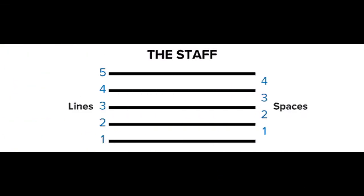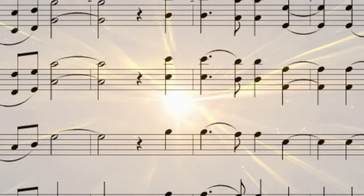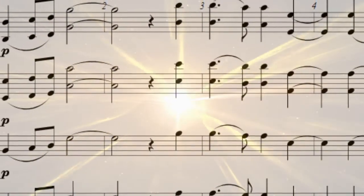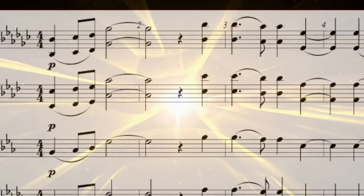The music staff has five lines and four spaces. Music notes are oval-shaped symbols that are placed on the lines and in the spaces. They represent musical sounds called pitches.